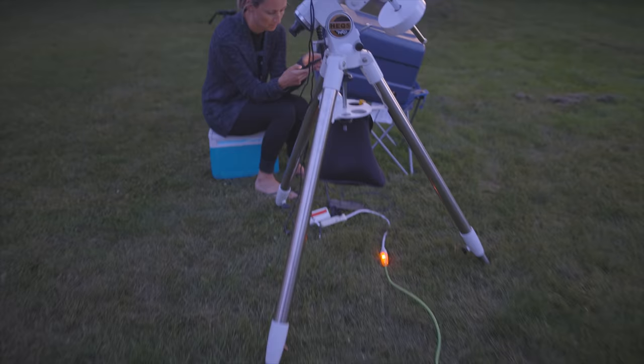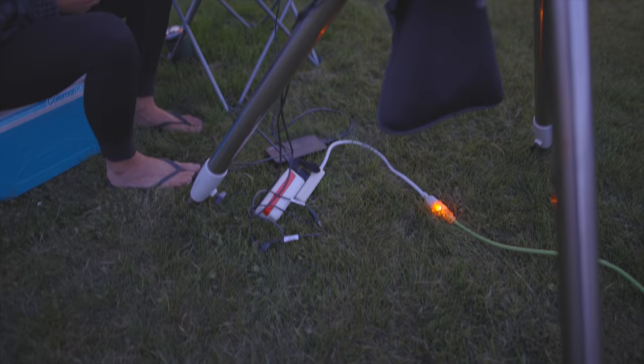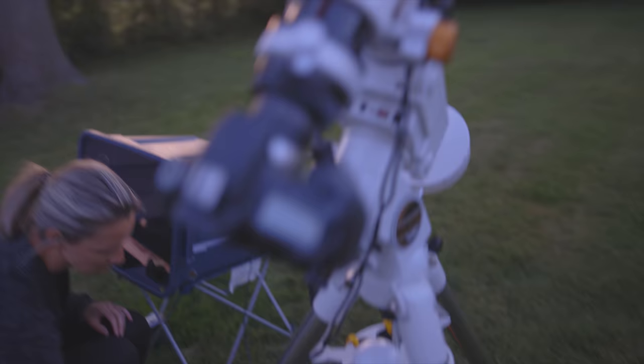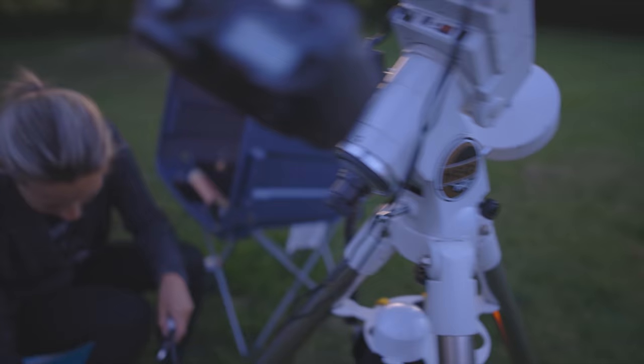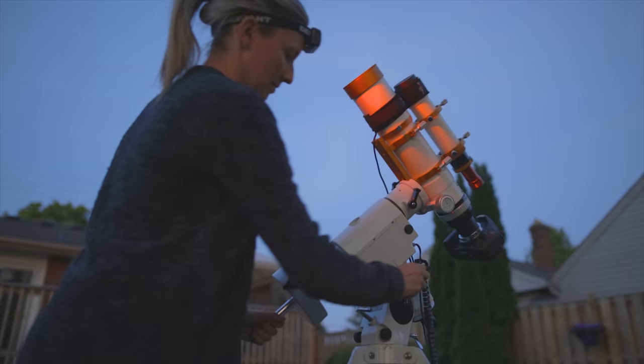As you can see here, we are plugged into household power with an extension cord. We've got a little power bar that has USB ports to power the dew heater bands on the telescope and then of course the telescope mount itself requires power and the laptop.